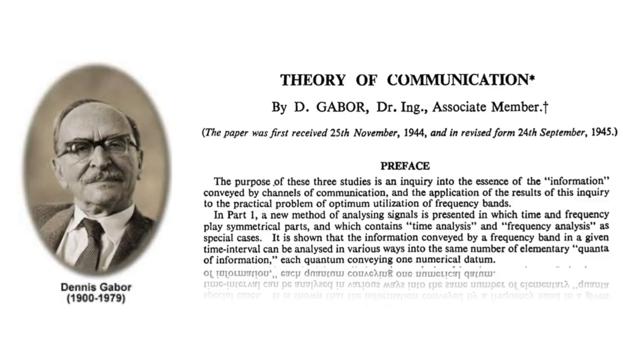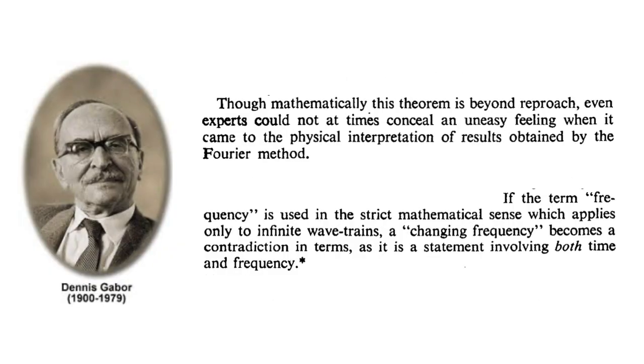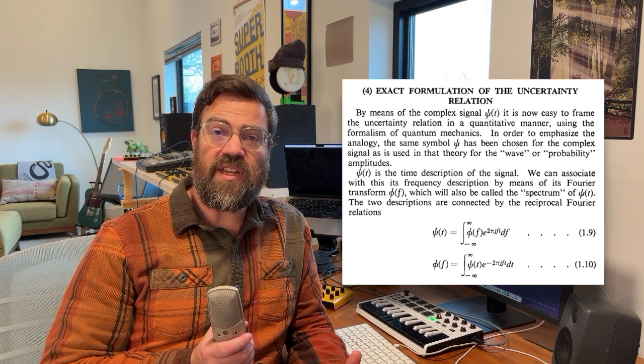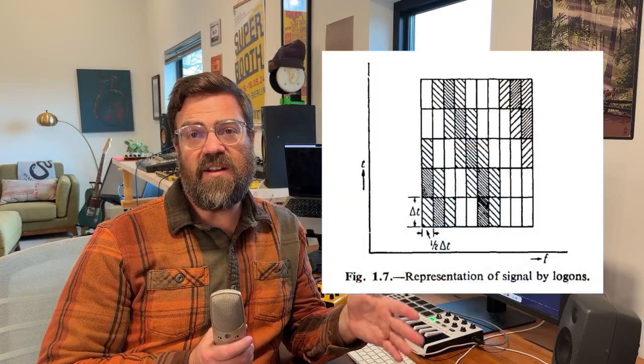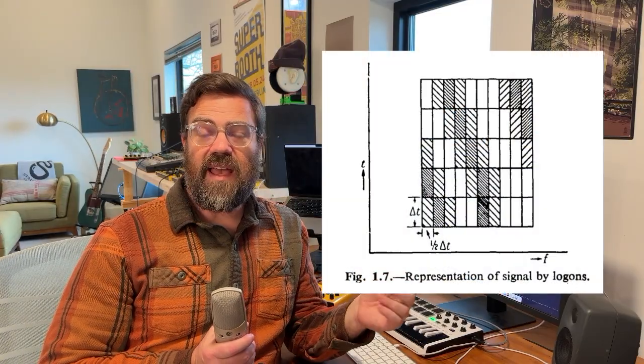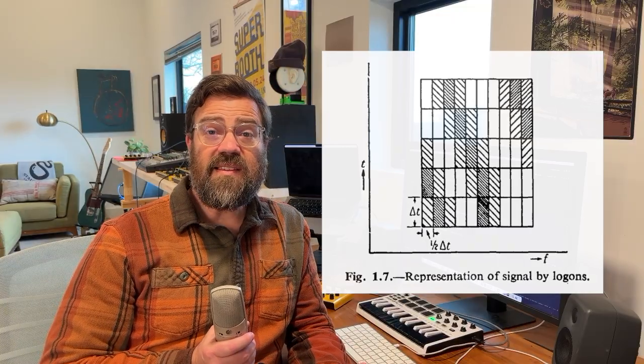In 1946, Dennis Gabor asked exactly that question: how precisely can we know both the time position and the frequency content of a sound? He discovered a fundamental trade-off — increasing resolution in time decreases resolution in frequency. To work within that trade-off, he proposed slicing audio into short time windows and applying Fourier analysis to each segment. This technique, what we now call the short-time Fourier transform, became the basis of the modern spectrogram.